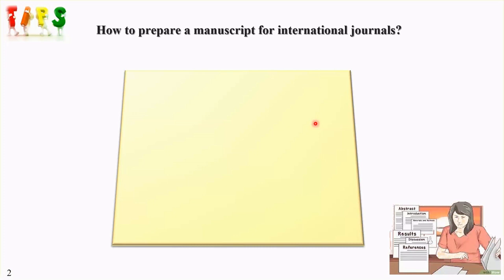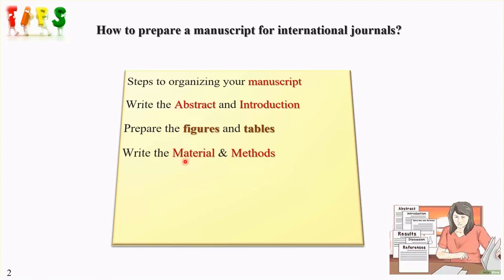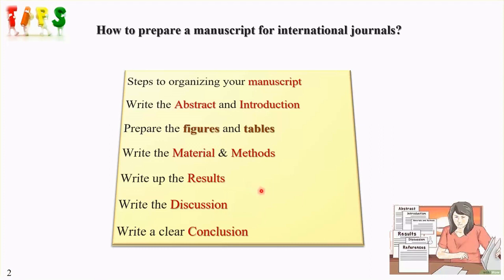In the next video we will describe how to organize our manuscripts and what the main steps and sections are. For example, how to write an abstract and introduction, what the main elements are in the abstract, introduction, keywords, and goals. We will also focus on how to prepare figures and tables for a good high-ranking scientific journal, and how to write up materials and methods and results.